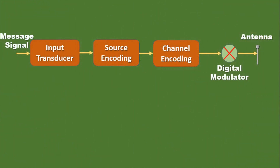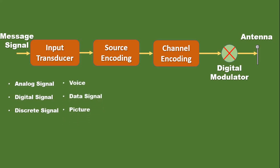In the transmitter block diagram, the first thing is the message signal or information source. When we talk about the information source, it could be an analog signal, a digital signal, or a discrete signal. An example of an analog signal is a voice signal, and a data signal is an example of a digital signal. These are all examples of physical signals, but we need to convert these signals into electrical signals using a transducer.